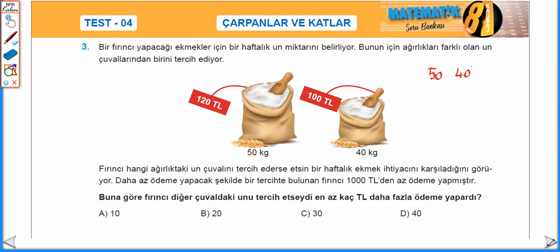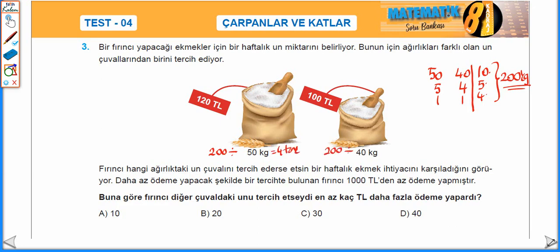Çünkü 1000 TL'den az ödeme yapacağız. 50'nin ve 40'ın en küçük ortak katını bulalım. İkisinin de birler basamağı 0 olduğu için 10 ile bölerek başlıyorum. 10'a böldüm 5 ve 4. 5 ve 4 aralarında asal olduğu için başka ortak bölenleri yoktur. 10'u, 5'i ve 4'ü çarptığımda 200 olarak bulunur. Yani 200 kilogramlık un ihtiyacı var. 200 kilogramlık un ihtiyacını karşılamak için 50 kilogramlık çuvallardan 4 tane, 40 kilogramlık çuvallardan ise 5 tane alması gerekir.